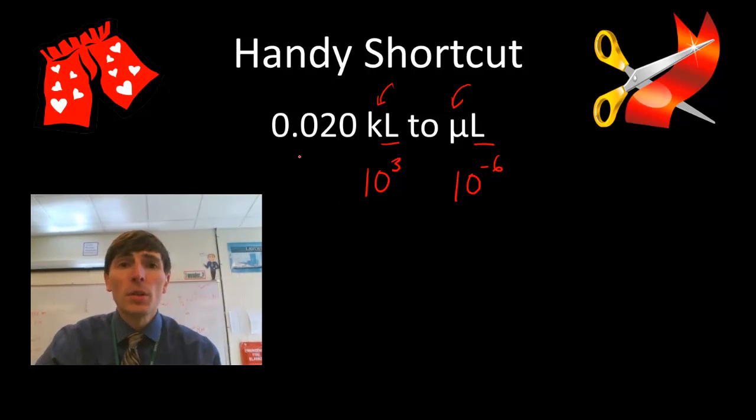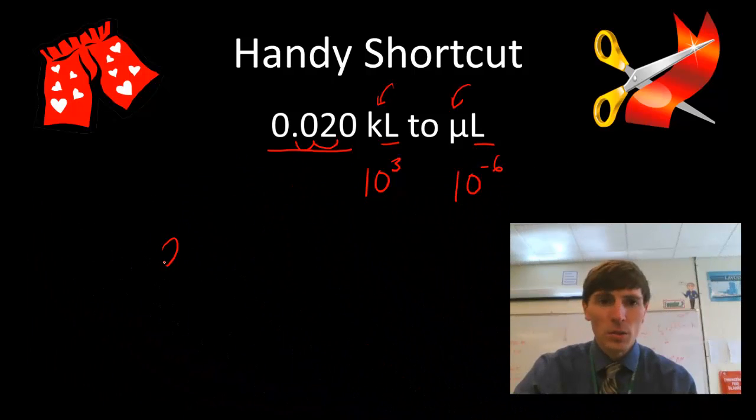So the first step you would do is I would probably take my initial answer and put it in scientific notation. Let's move that back. So 2.0 times 10 raised to the negative 2 kiloliters.